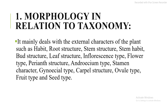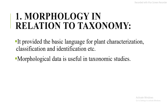First, I will discuss morphology in relation to taxonomy. It mainly deals with the external characters of the plant such as habit, root texture, stem texture, stem habit, bud texture, leaf texture, inflorescence type, floral type, perianth structure, and fruit type, stamen characters, and gynoecium type. It provides the basic language for plant characterization, classification, and identification. Morphological data is useful in taxonomic studies.